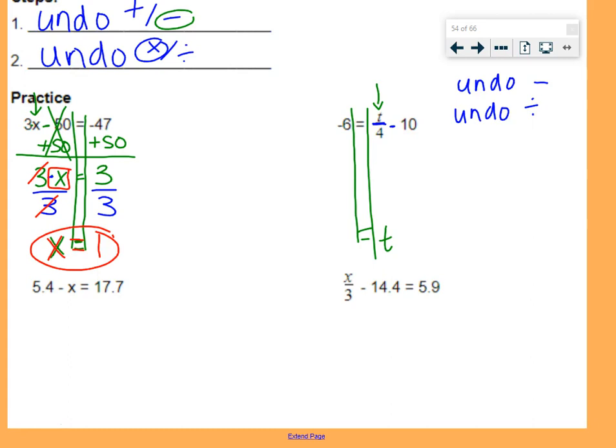Undo subtraction with its opposite. The opposite of subtraction is addition, so we're going to add 10 because right there we're minusing 10. Do it to both sides, so we keep the balance. Negative 6 plus 10. Down 6, I gain 10, so I'm up 4. 4 equals, well, negative 10 plus 10 is nothing, so we have t over 4, which is really t divided by 4.